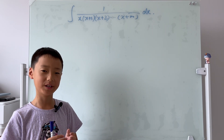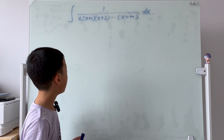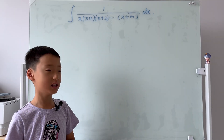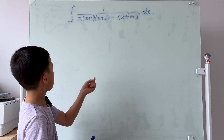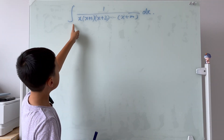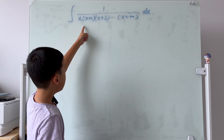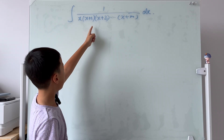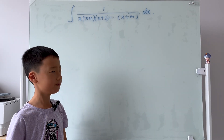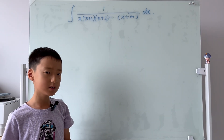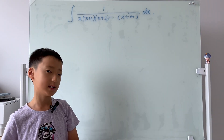Hi guys, welcome back to another video of me integrating. Today I'm going to share with you guys this integral that really perplexed me the other day. We have an integral with a very long fraction, and on the denominator we have x times x plus 1 times x plus 2 multiplied all the way to x plus n. The bottom is already fully factorized for us, so how would you guys proceed with this?